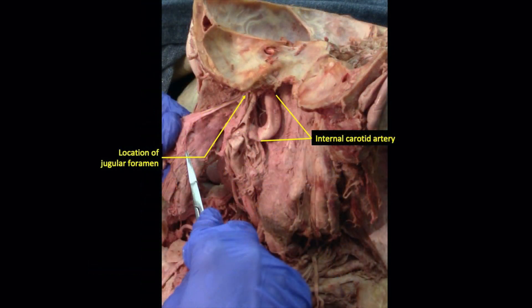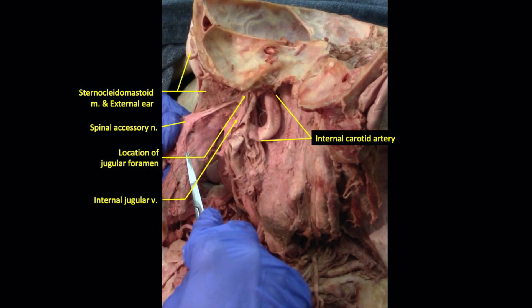Going back to the jugular foramen, we identify the internal jugular vein exiting from it. Recall the muscle that attaches just posterior to the ear — the sternocleidomastoid — and its nerve, the spinal accessory, cranial nerve 11. After innervating the sternocleidomastoid, the nerve continues in the posterior triangle to innervate the trapezius muscle.